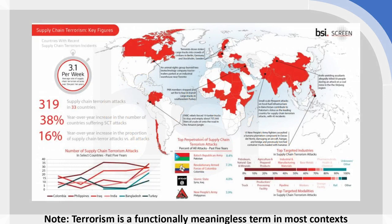The last map we're going to look at is one supplied by BSI, an analysis company focusing on what they call supply chain terrorism. I have a major problem with the term terrorism — I think it's functionally meaningless in many contexts, which is easily supported by trying to find any generally applicable definition. But in this case, we can forgive BSI's use of this, simply because it sheds light on a really interesting and important trend: violent disruption to various supply chains, which is a trend that's been increasing over the last decade and, because of our massively increasing reliance on global supply chains, is a really serious potential problem.